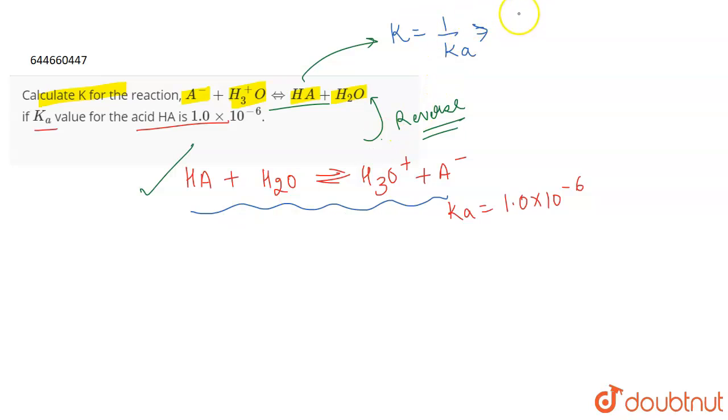So this will be 1 by Ka, which is 1 divided by 1 × 10^-6. This becomes 10^6 and the correct answer for the question.